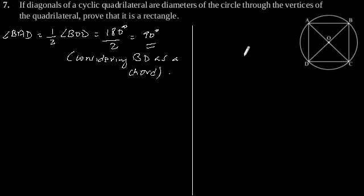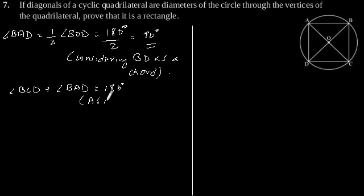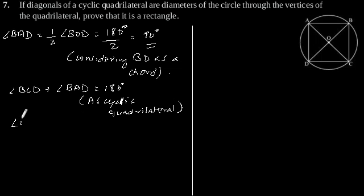Now, as this is a cyclic quadrilateral, angle BCD plus angle BAD is equal to 180 degrees. Since angle BAD equals 90 degrees, this gives angle BCD equal to 180 minus 90, which equals 90 degrees.